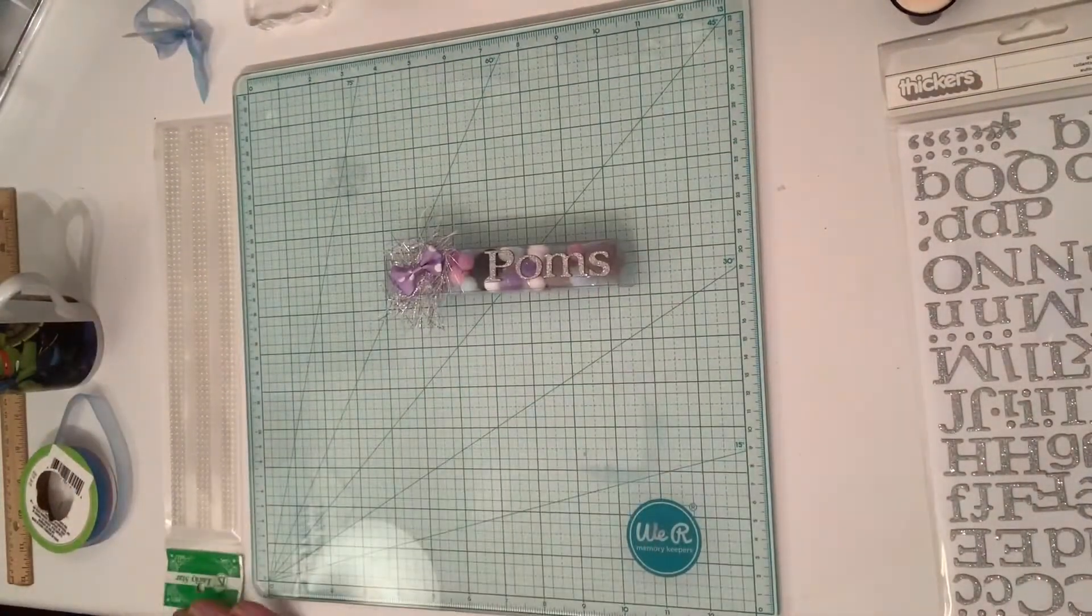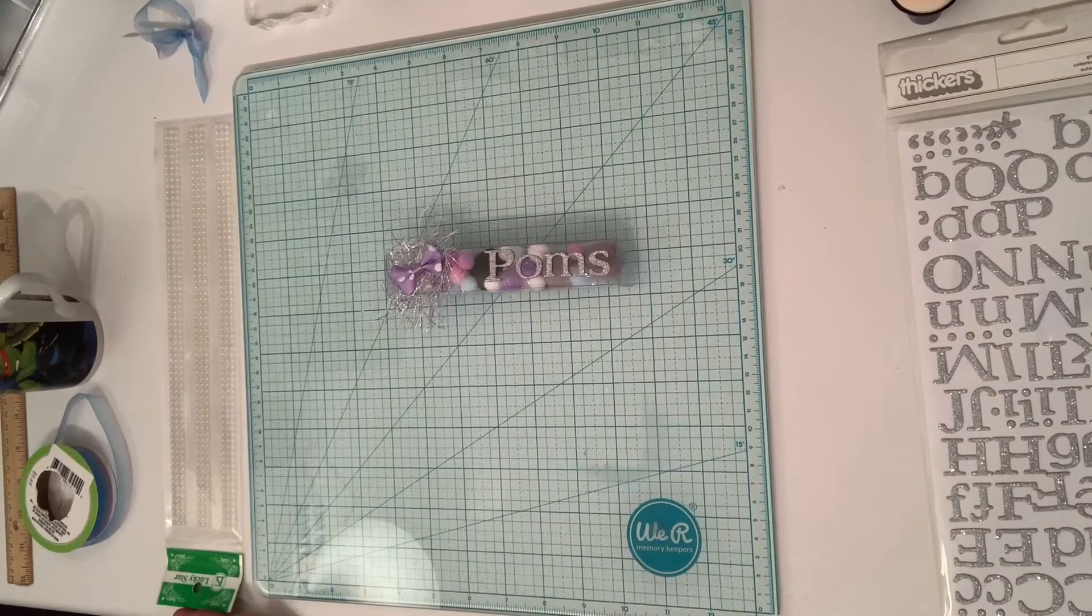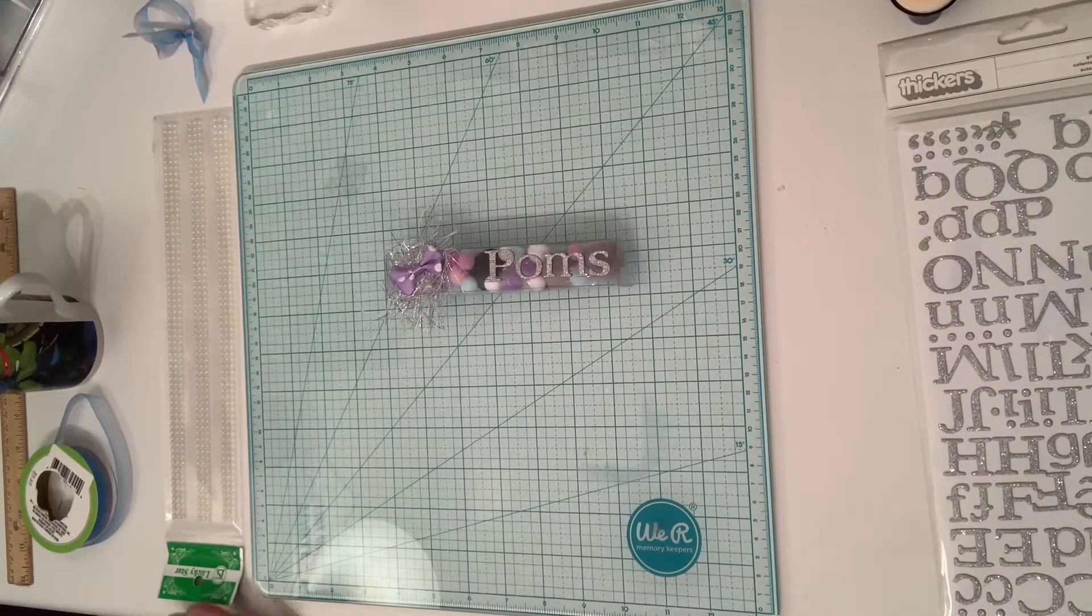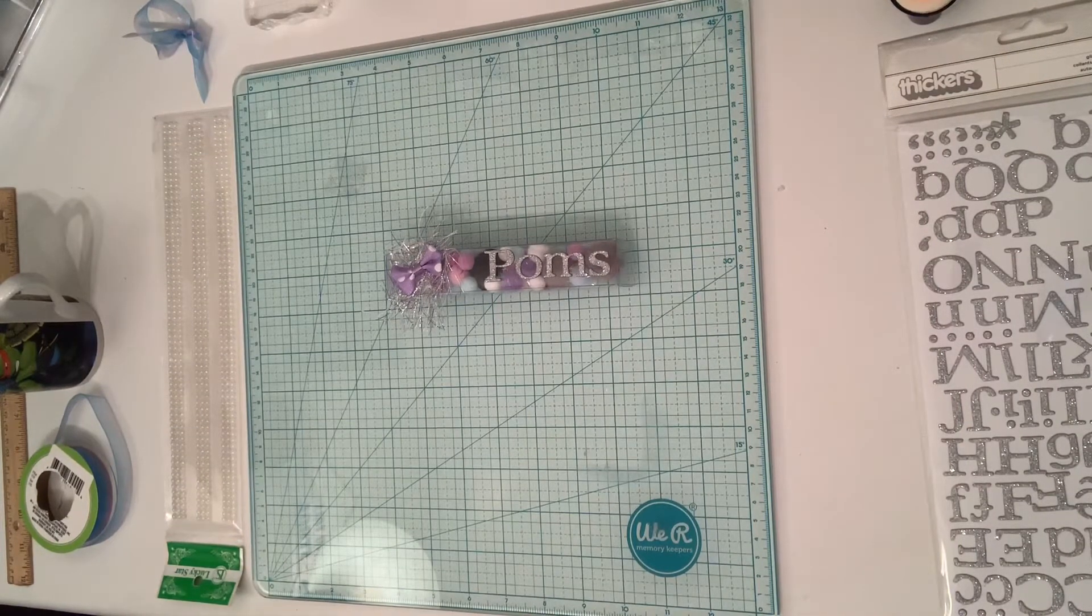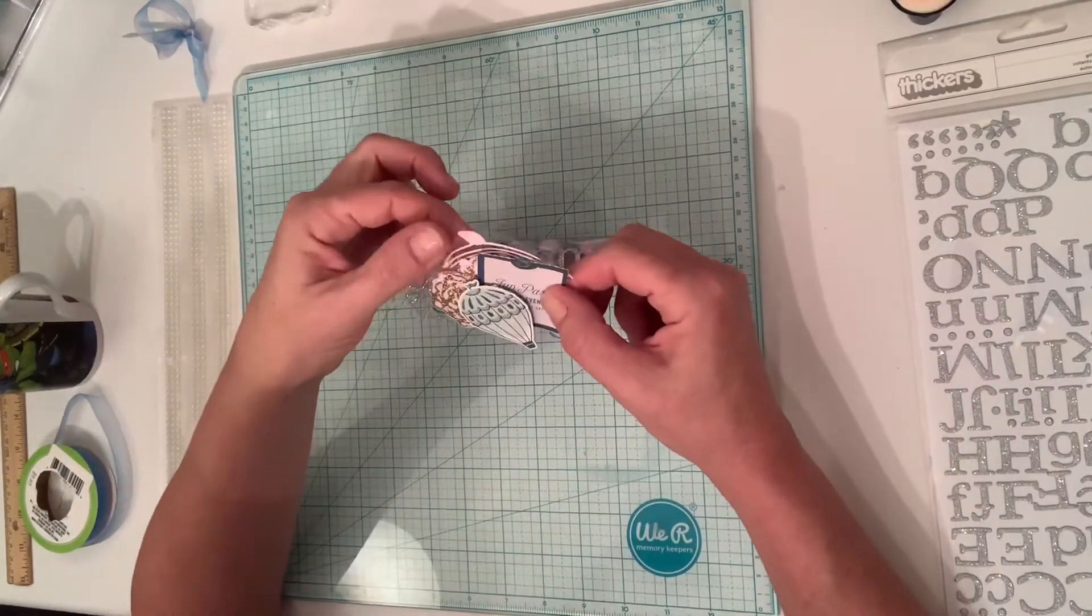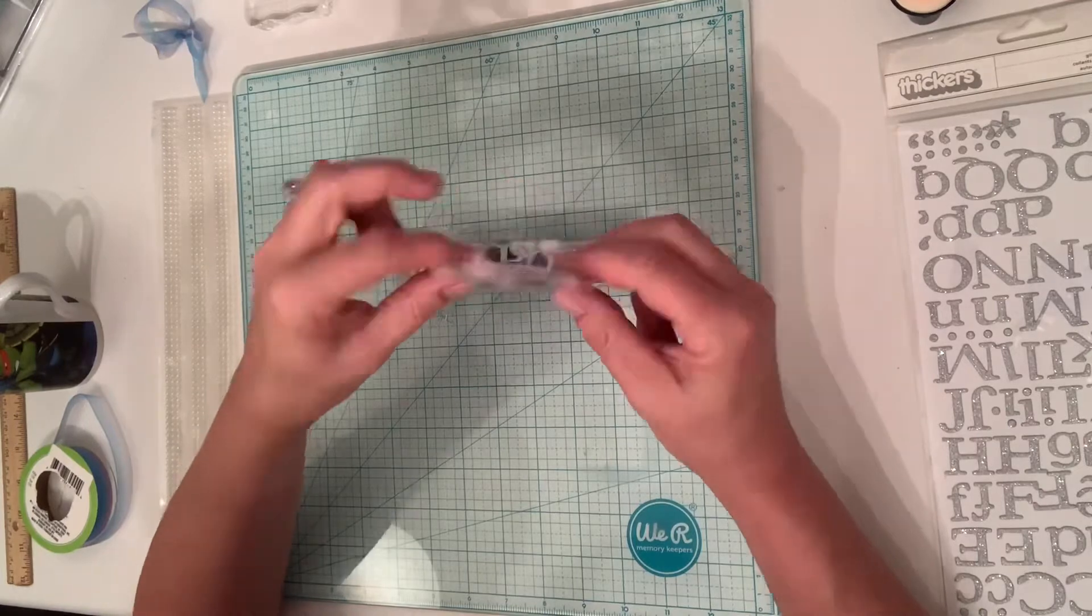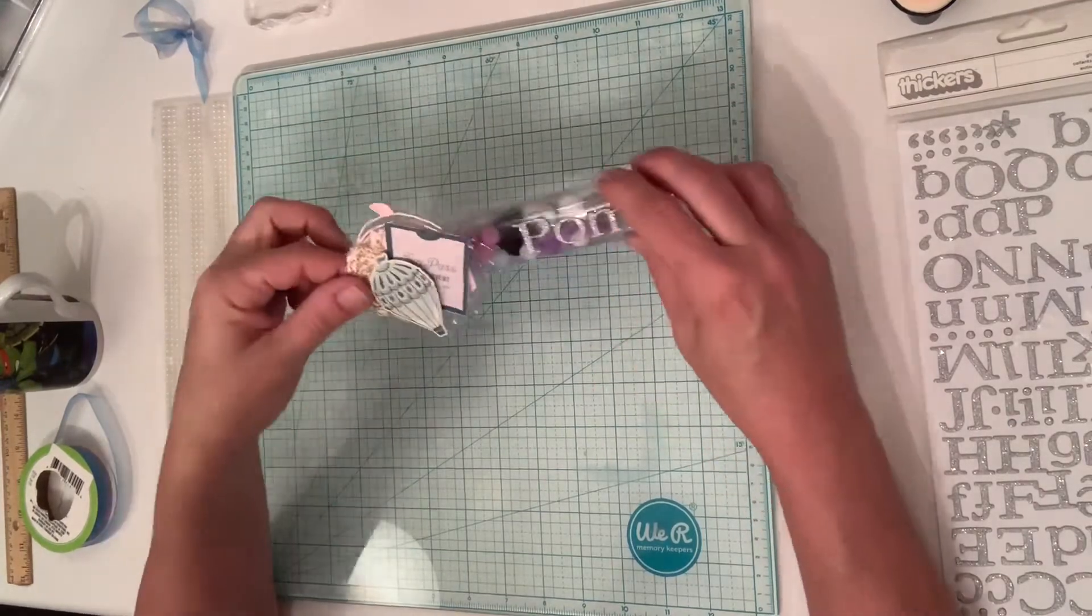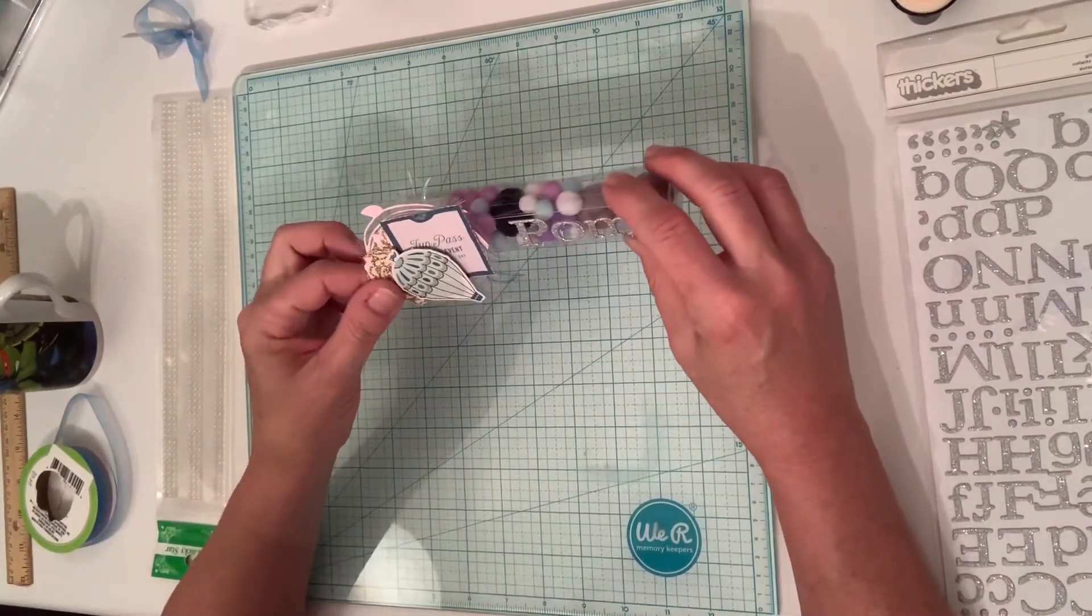And then I was also going to do something like this. This came to me in a swap, but it was on a rosette, so I pulled it off the rosette. I was going to attach that there. I thought that would look really cute as well.